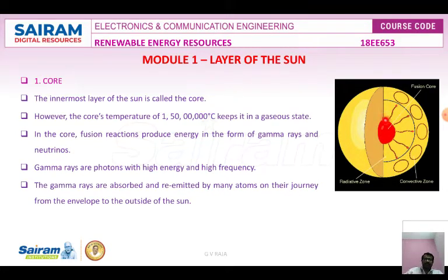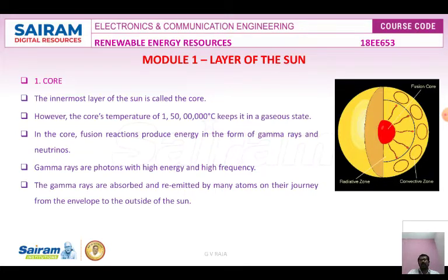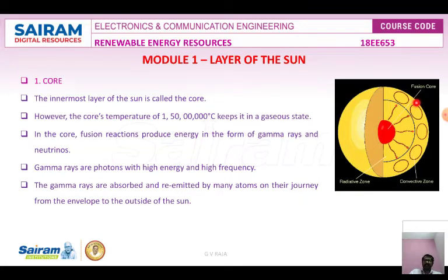The core is the innermost and central part of the sun, with a density of nearly 160 g/cm³ — about 10 times greater than expected for a solid. However, the core's temperature is nearly 15 million degrees Celsius, so it exists in a gaseous state. In the core, fusion reactions produce energy in the form of gamma rays and neutrinos. Gamma rays are high-energy, high-frequency photons.